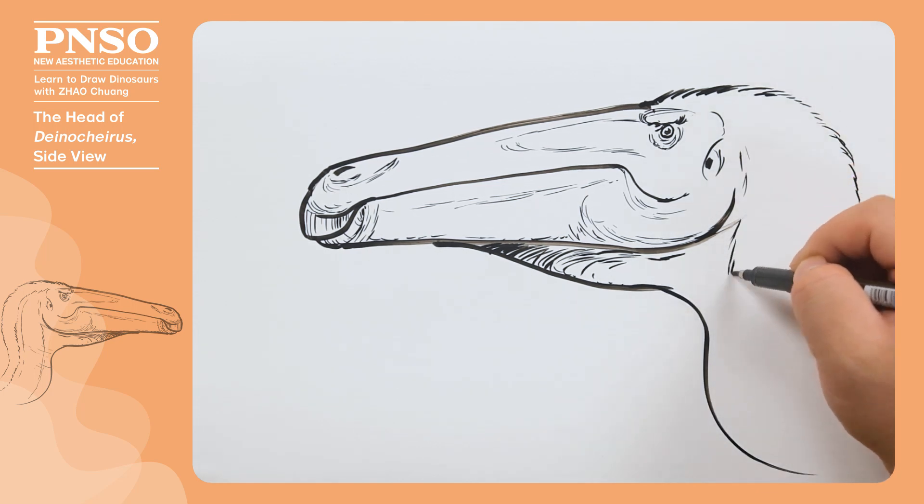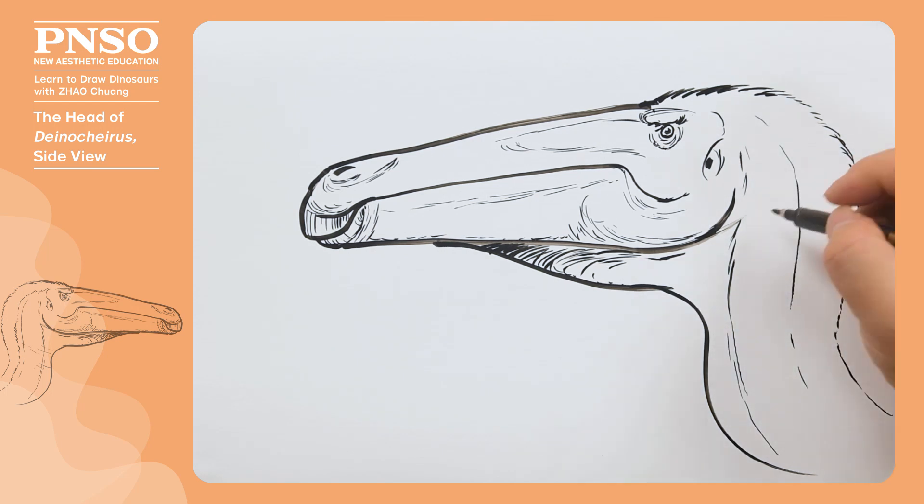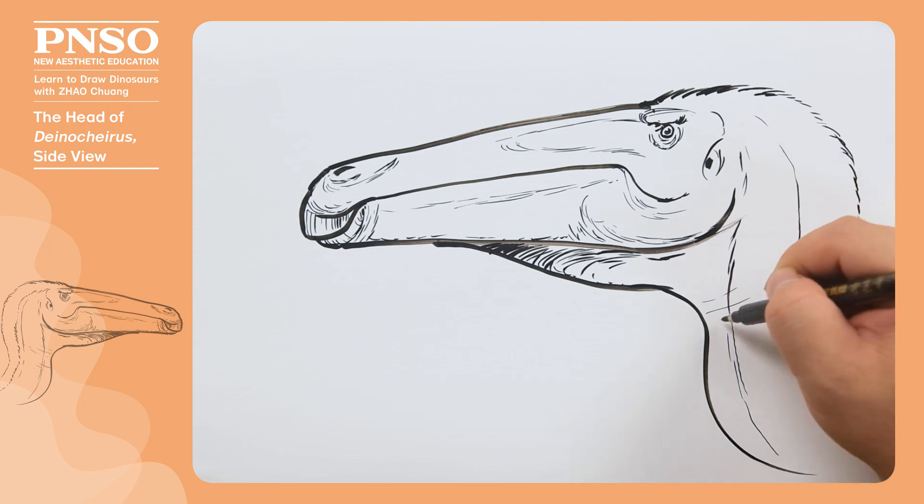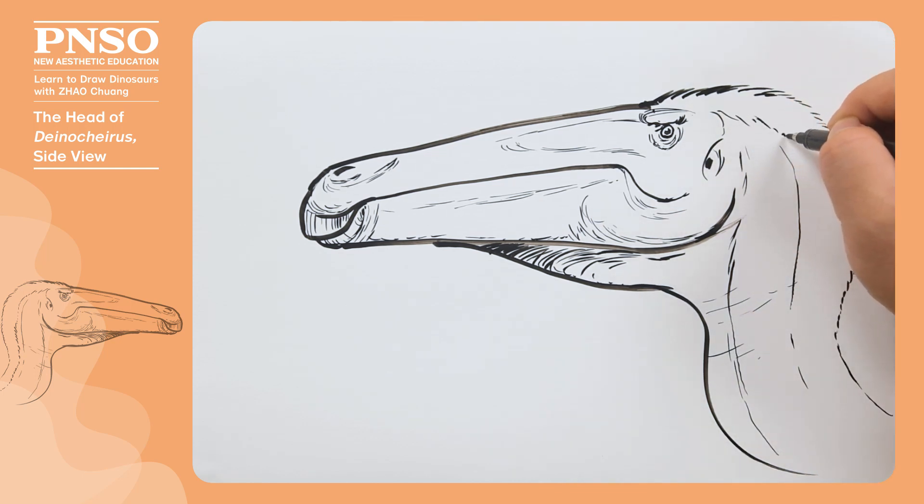Finally, draw some muscles and wrinkles on the top of the neck. We can slightly show the boundary between the feathers and skin on the neck.